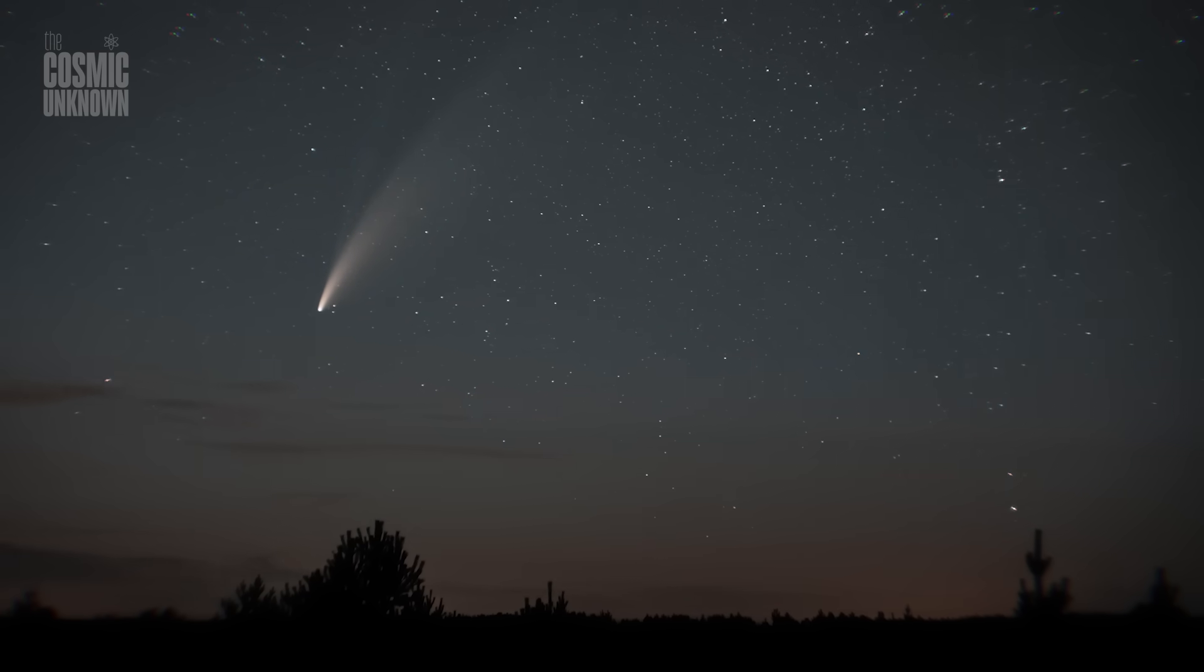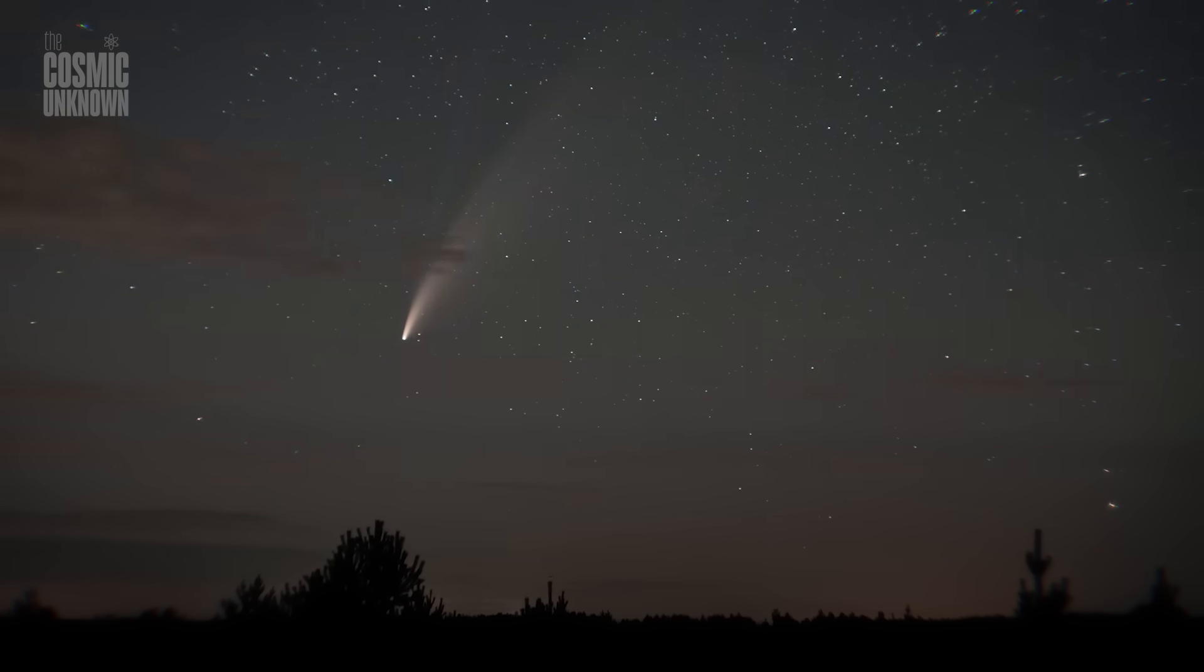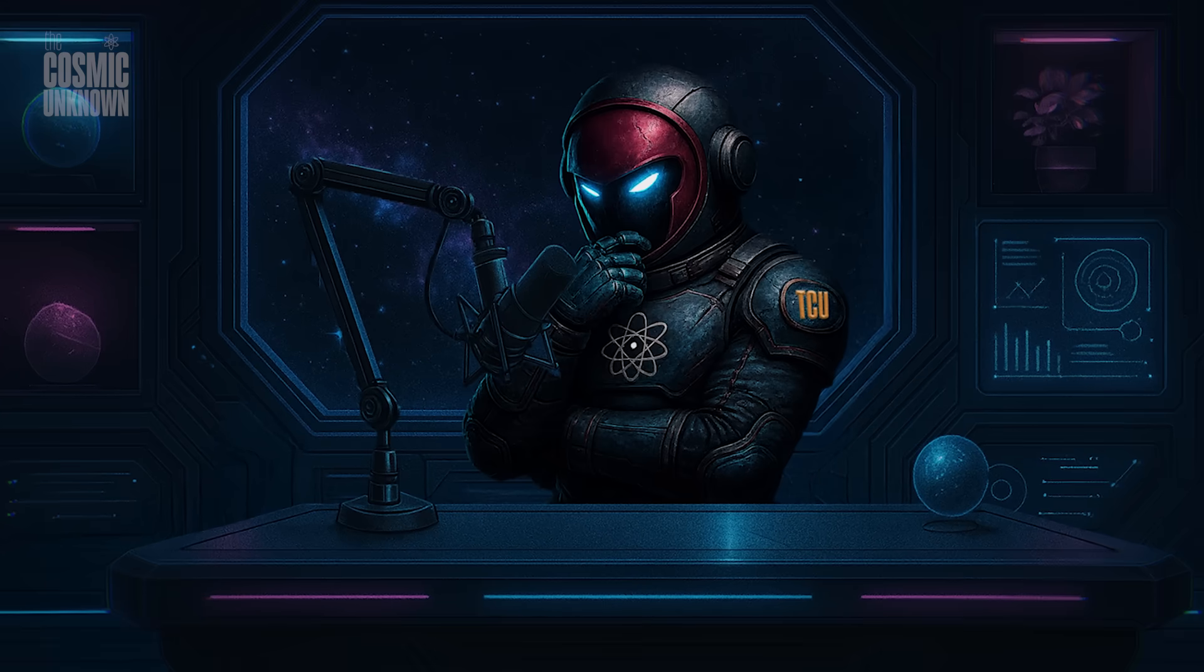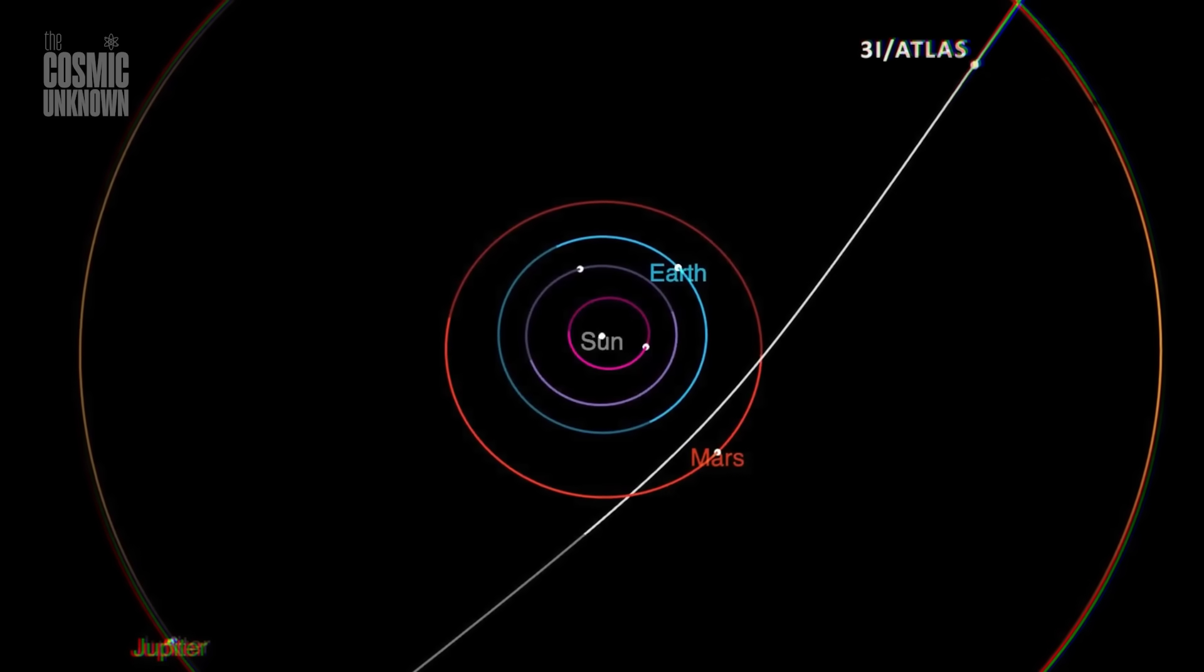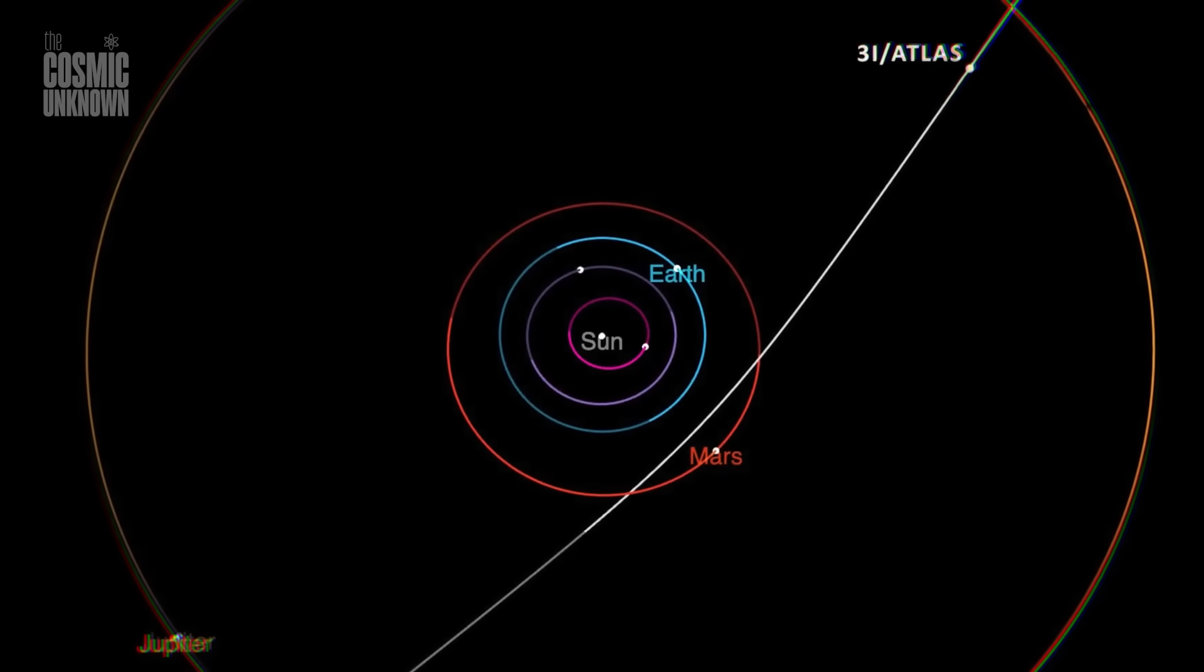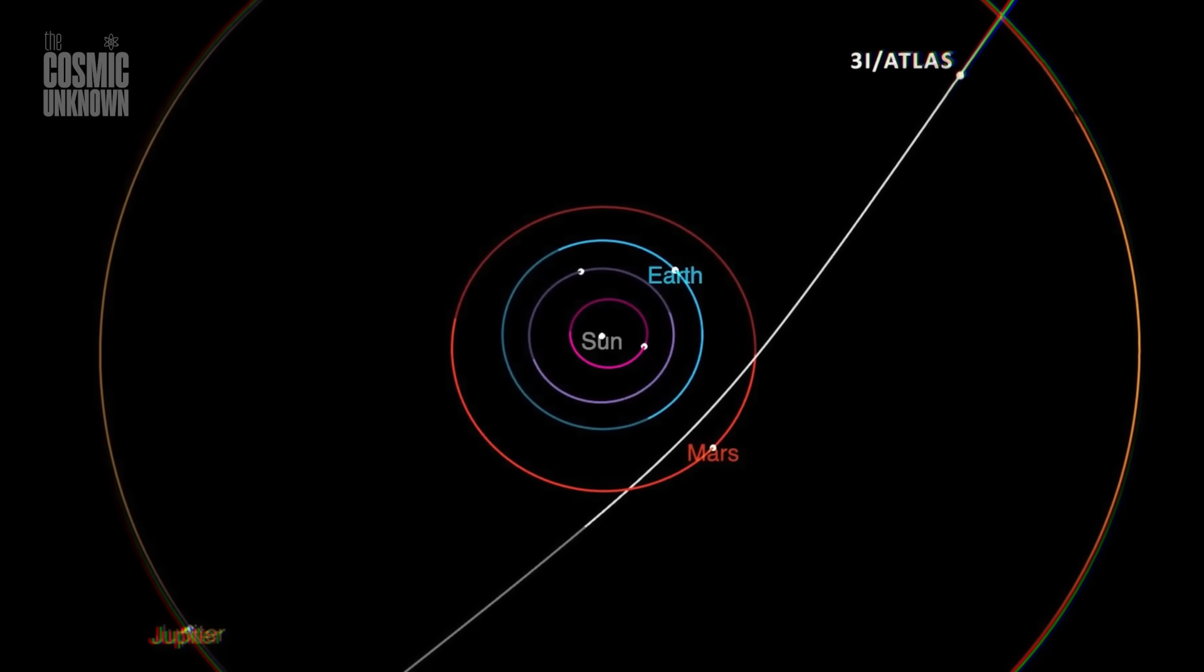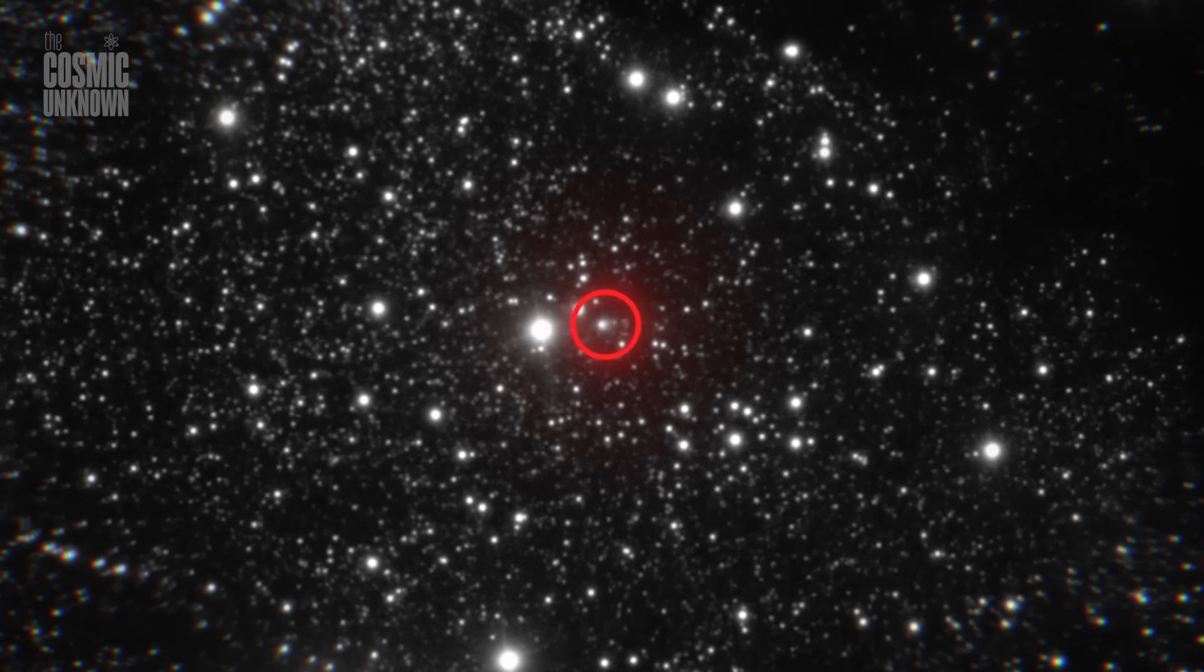Avi Loeb has proposed a more controversial idea that 3I Atlas could be artificial, possibly a probe. He points to the precision of its orbit, the rarity of its trajectory, and the potential for low-level non-gravitational accelerations as reasons to investigate further.